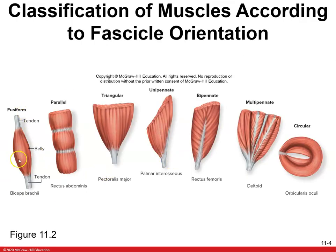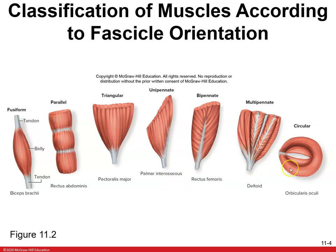Here's the classification of muscles: fusiform, parallel, triangular, unipennate, bipennate, multipennate, and circular. Some examples: fusiform — biceps; parallel — rectus; triangular — pectoralis major; unipennate — palmaris interossei; bipennate — your quads; multipennate — your deltoid. And then here are those little sphincters: orbicularis oculi, which is around your eye, and orbicularis oris, which is around your mouth.